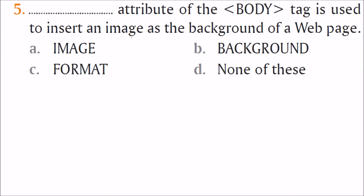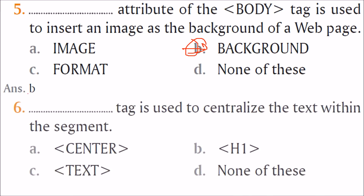Which attribute of the body tag is used to insert an image as the background of a web page? The answer is B — the background attribute. Which tag is used to centralize text? The answer is A — the center tag.